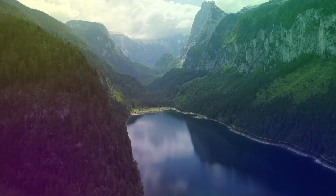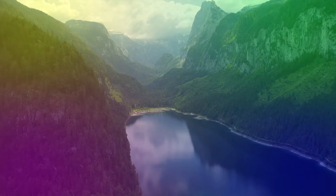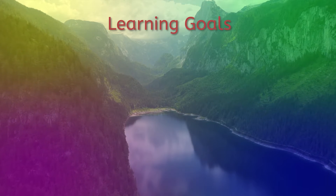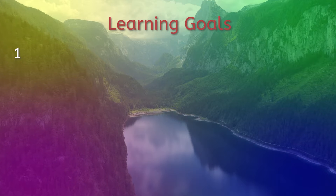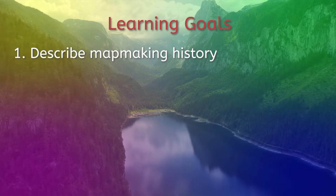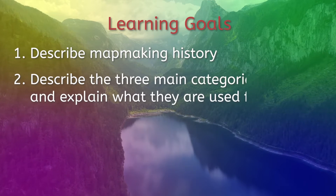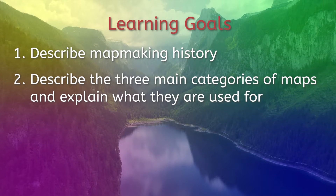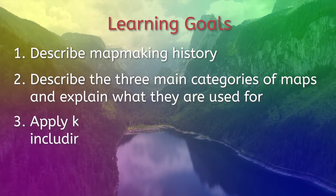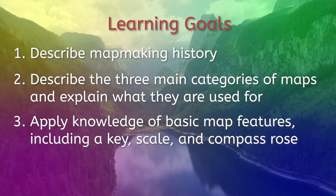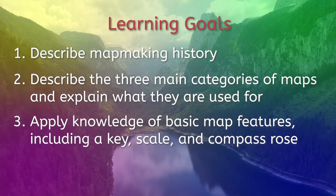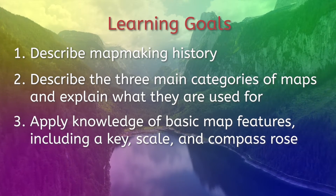The road map for today's lesson includes the learning goals: describe map-making history, describe the three main categories of maps and explain what they are used for, and apply knowledge of basic map features including a key, scale, and compass rose.